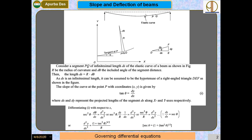We can consider a small segment PQ of infinitesimal length ds of this elastic curve, where r is the radius of curvature and dθ is the included angle between the two segments. So we can write ds = r dθ.